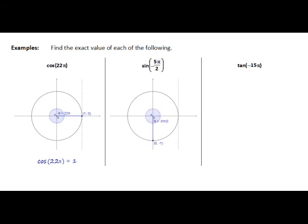So now we're just thinking about sine at this point — and sine is to do with the y coordinate at this point. So sine of negative 5 pi on 2 must be negative 1.